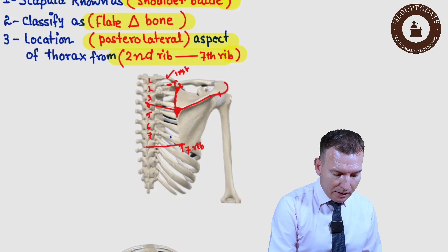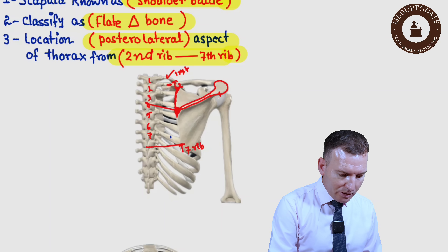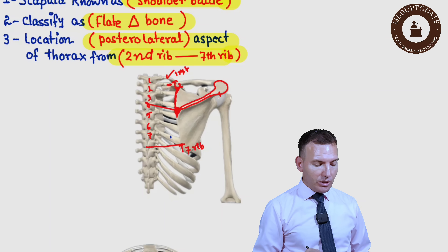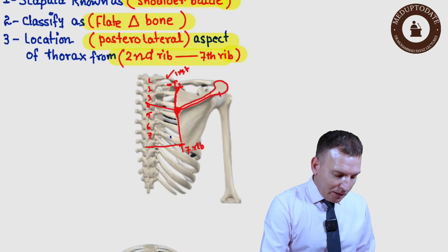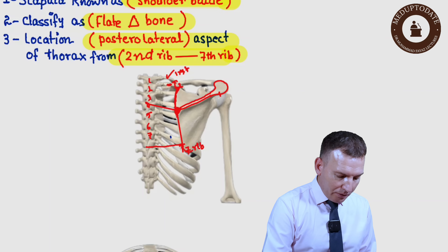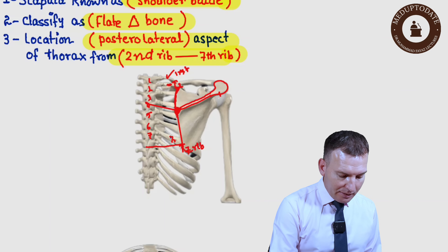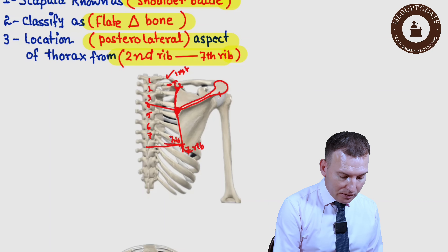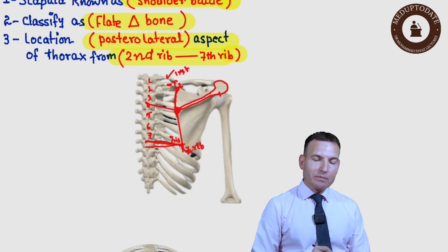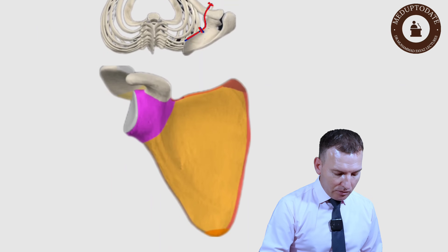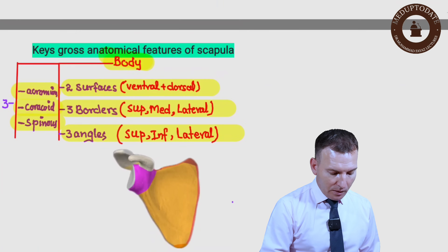Here we have the scapular spine, and further along we have the acromial angle. At this point we have the acromial angle, and this part continues as the acromial process, which we will discuss in more detail. The inferior angle lies at the seventh rib and corresponds to the spine of the seventh vertebra.